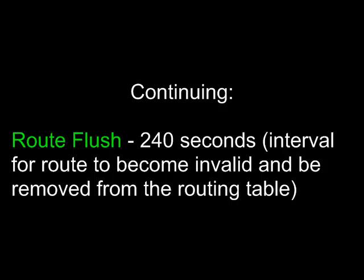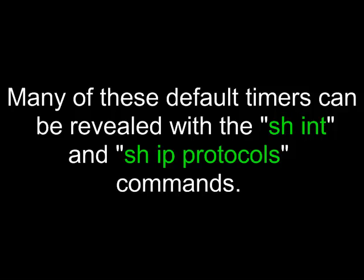Finally, the route flush timer is 240 seconds, and that's the interval for a route to become invalid and be removed from the routing table. Many of these default timers can be revealed with the show interface and show IP protocols commands.